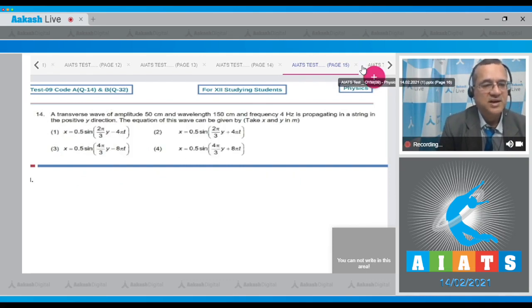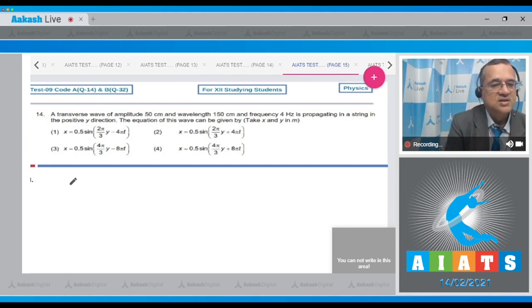Question number 14: A transverse wave of amplitude 50 centimeter and wavelength 150 centimeter with frequency 4 hertz is propagating in a string in positive y direction. The equation of this wave can be represented taking x and y in meters - four options. As it is propagating along y direction, I take x is equal to a sine of ky minus omega t. A is 50 centimeter, so this becomes 0.5 meter.